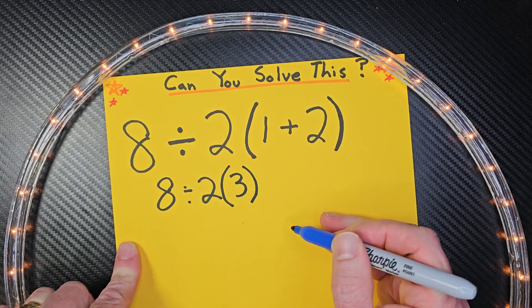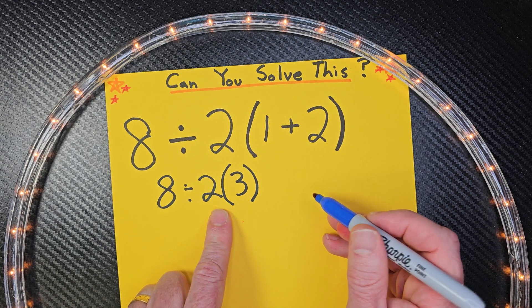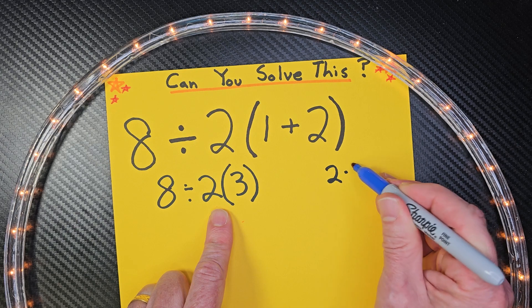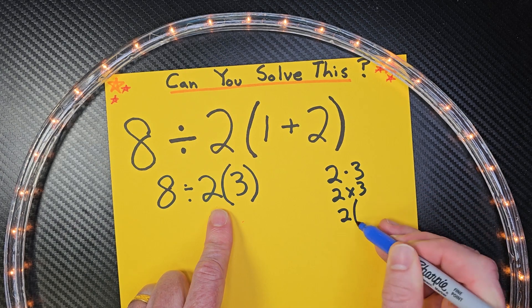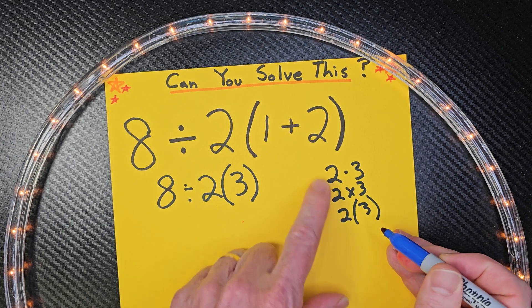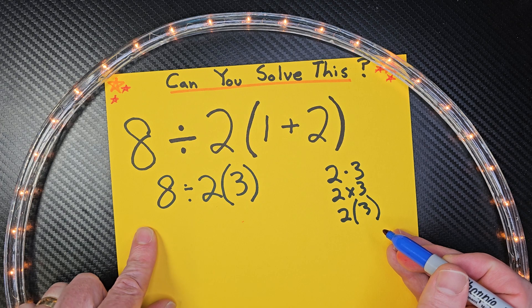And if you didn't know this, this is multiplication. Multiplication can be written like 2 times 3, or 2 times 3. Lots of different ways on how to express multiplication.